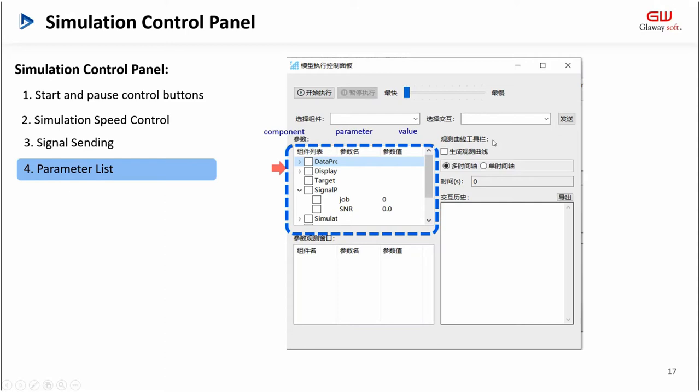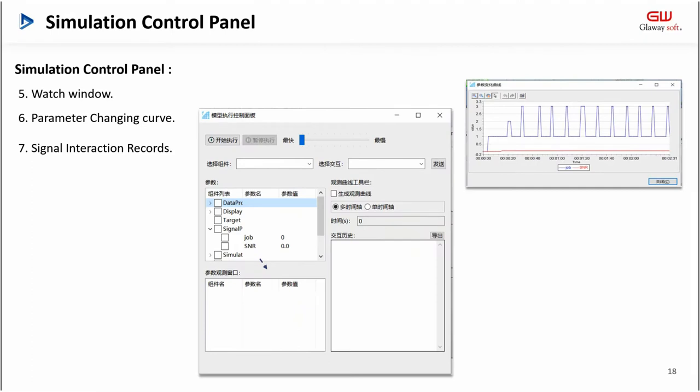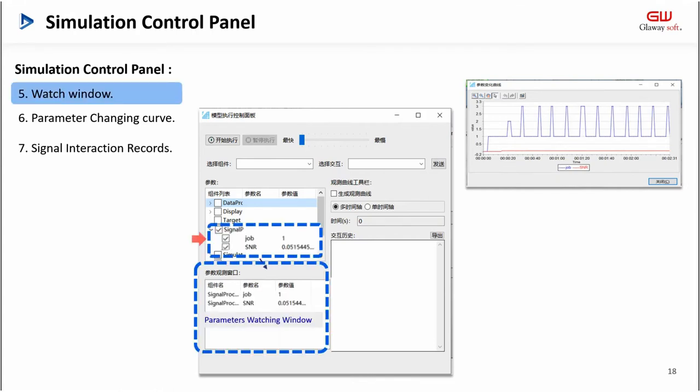The fourth is the parameter list. In the parameter list, users can see or modify all the parameters involved in this simulation in real time. The fifth part is the watch window. Because too many parameters are listed in the parameter list, which is inconvenient for observation, we support selecting parameters in the parameter list by checking them to add them to the watch window. Parameters in the watch window also support being modified.